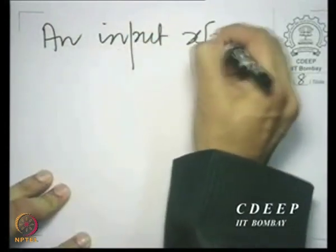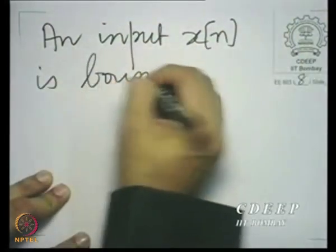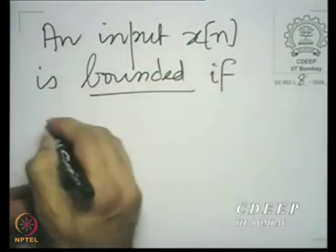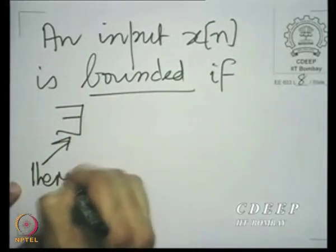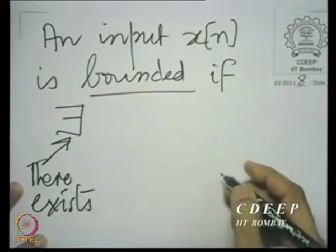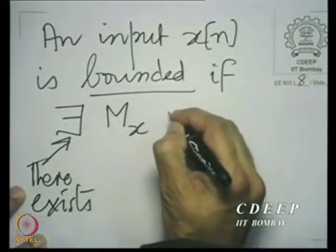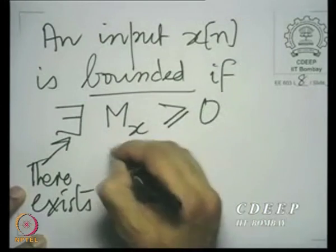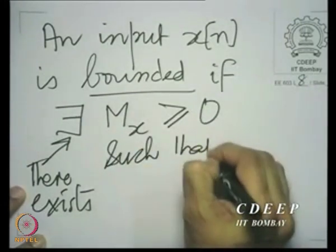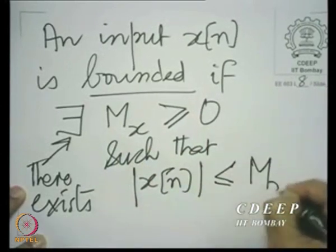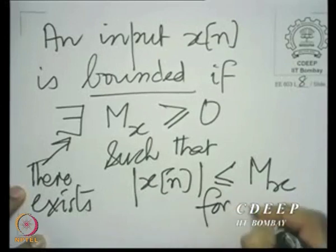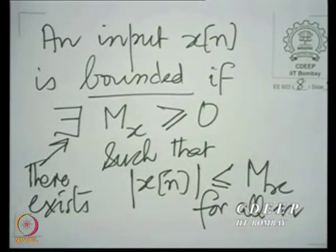We said that an input x[n] is bounded. Introducing a new notation, we use '∃' to denote 'there exists.' So, there exists an M_x which is greater than or equal to 0, such that |x[n]| is less than or equal to M_x for all integer n.